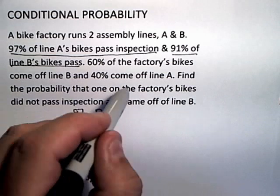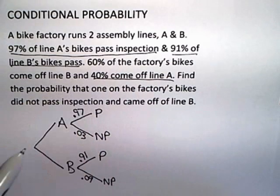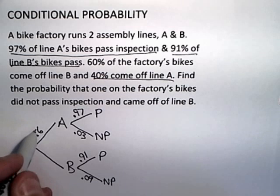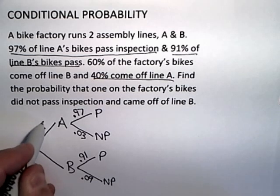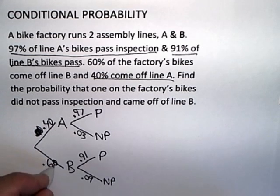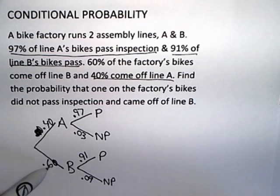I also know that 40% of the bikes come off of line A. So the probability of a bike being assigned to line A is 40%, 0.4, which means that there's a 60% chance, 0.6 or 0.60 if you like, of a bike being assigned to line B. So 40% chance of being assigned to A, 60% chance of being assigned to B.